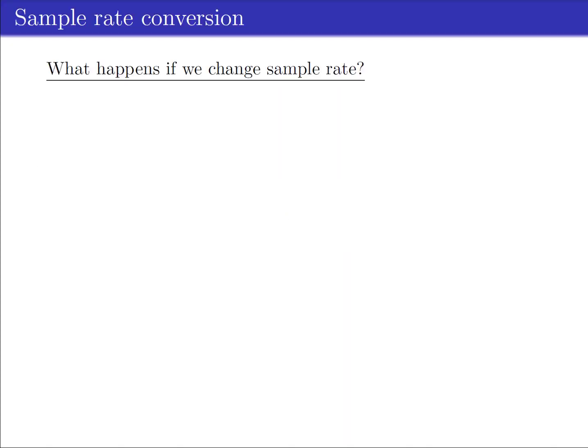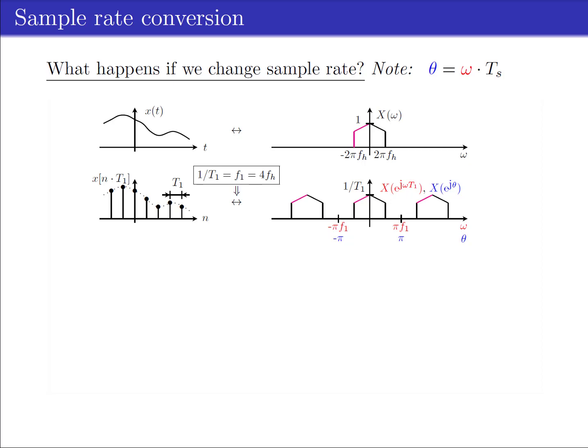Let's first see what happens if we change the sampling rate of a discrete time signal. Assume the real continuous time signal x(t), with symmetric spectrum X(omega), is band-limited up to the radian frequency 2*pi*fh. When sampling x(t) with sampling frequency f1 = 1/T1 = 4 times the highest frequency fh, the repeated spectra of the discrete time signal samples x[n,T1] are depicted at the right-hand side of the figure. We can represent this spectrum as a function of the absolute frequency omega or as a function of the relative frequency theta, which are related as theta = omega * Ts.